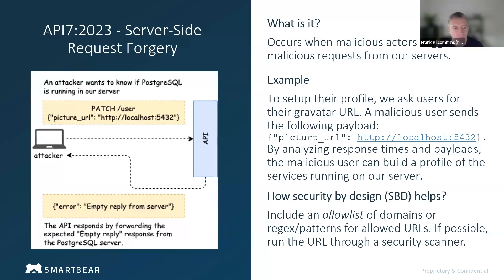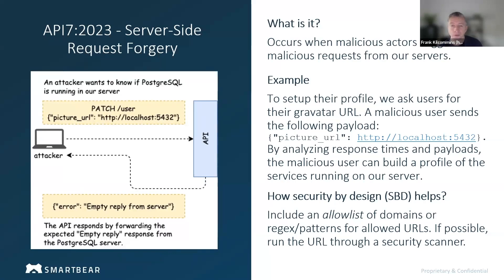From a design perspective, we can have the concept — at least within the implementation — that we would have an allow list or a deny list of domains that we would accept in that particular property, and also apply some regex patterns to ensure it's a correctly formed URL and prevent other types of injection. Secondly, if we know it's going to be a URL, and if we have the ability to run it through some form of security scanner before we persist it or execute on top of it, that would also be very good.